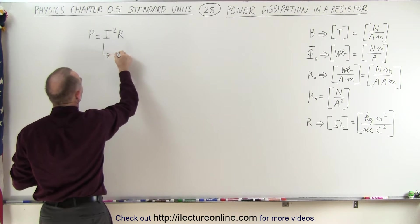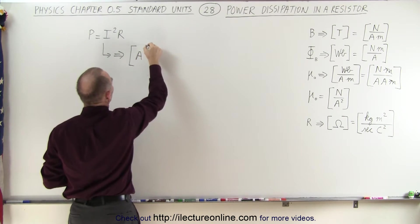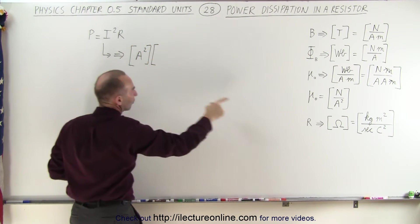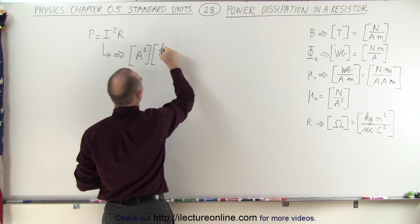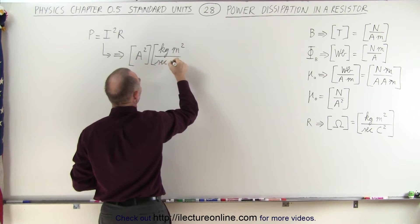So let's go ahead and plug in what we have here for units. So this would then become, units for current is amps, so we have amps squared, and the units for resistance we now know is kilograms meters squared per second times coulomb squared.